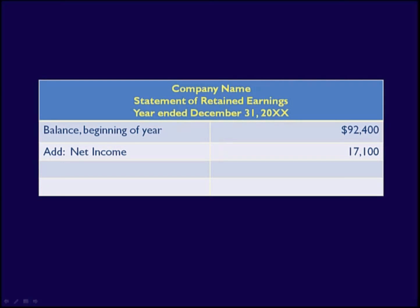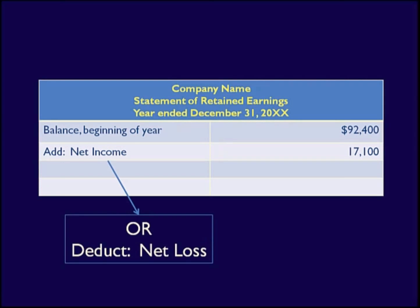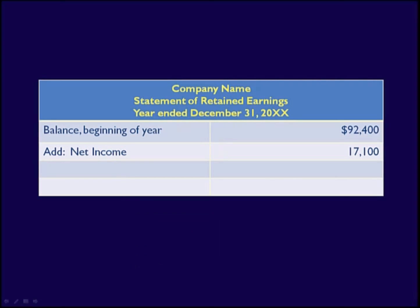Next, the net income from the income statement is added to the beginning balance. If the company had a net loss, it would reduce the prior year's retained earnings balance. In this case, we have net income, so we would add $17,100 to the opening balance of $92,400.